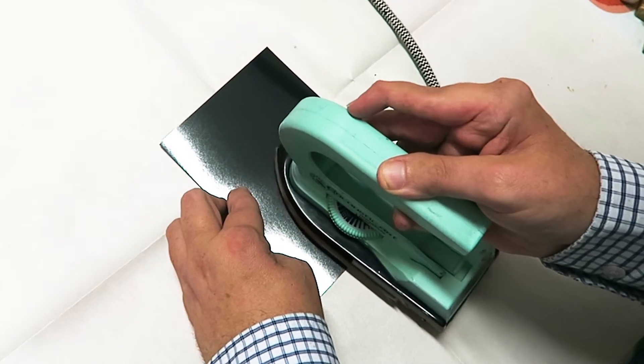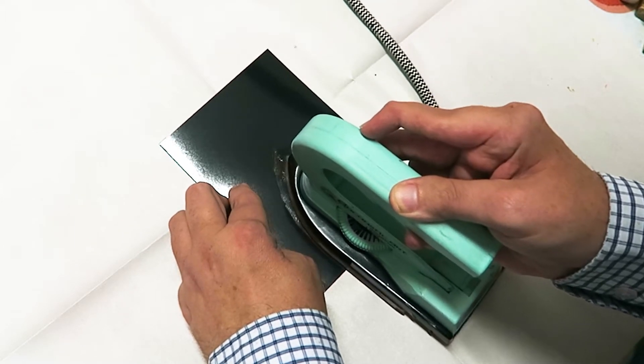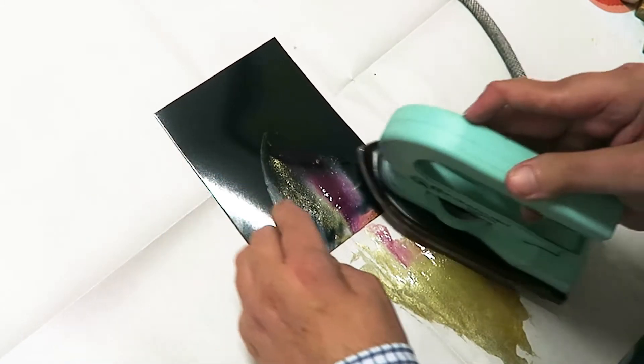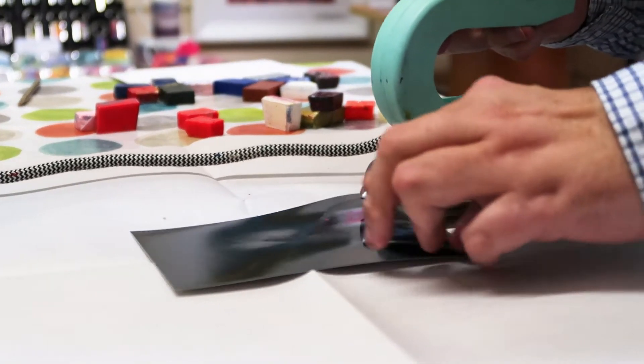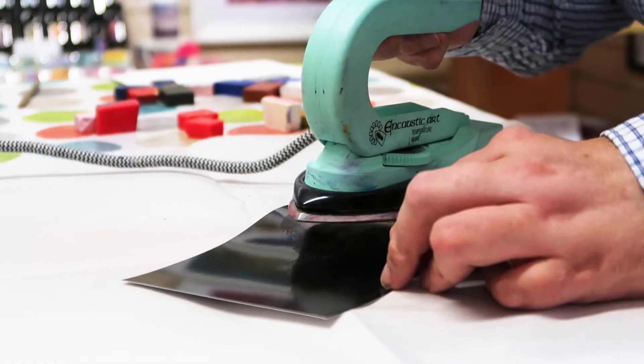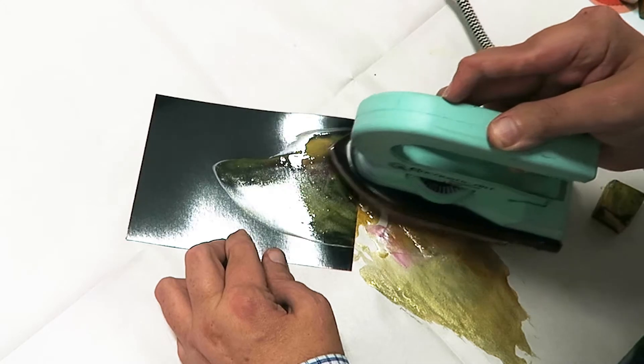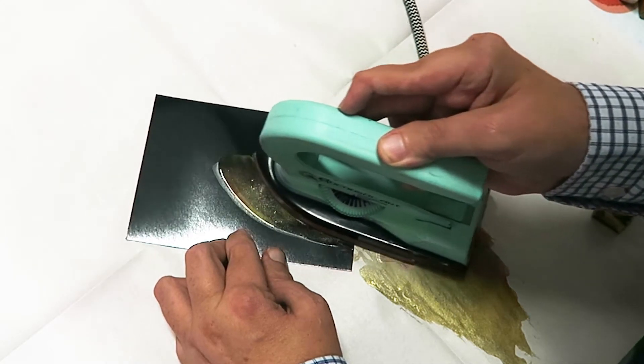Then I'm going to run the iron downward to get the base of the fire. Just twist my card slightly, bring that back up. Add a bit more yellow there.